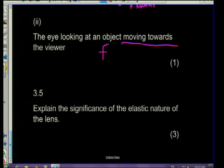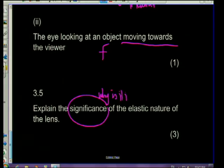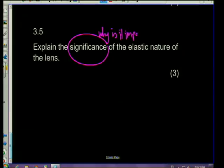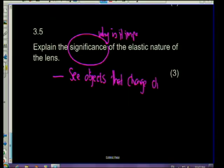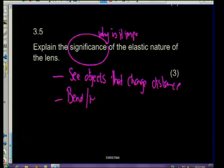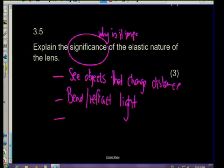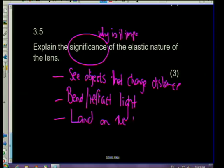Question 3.5: explain the significance of the elastic lens. Why is it necessary for the lens to be elastic? First, it allows us to see objects that change distance - from far to near. Second, it allows us to bend or refract light so that it will eventually land on the retina.